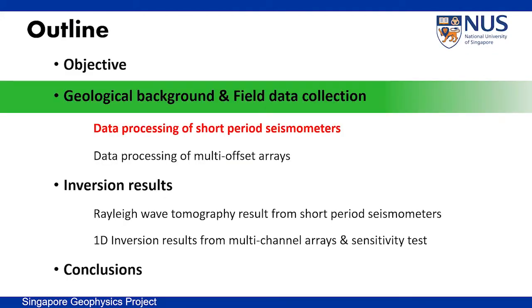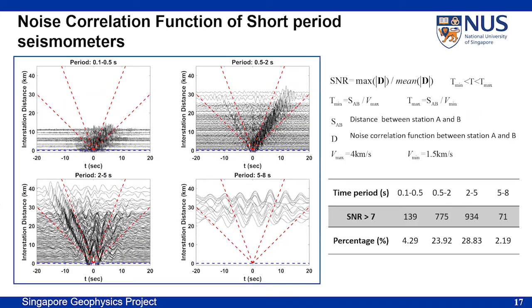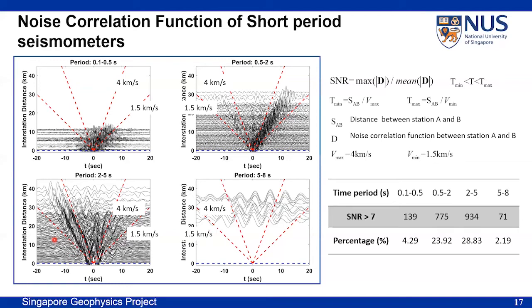For the short-period seismometer records, we cross-correlate all receiver signals with each other, finally getting a total of 3,240 station pairs. We define signal-to-noise ratio as the ratio between the maximum amplitude and the average amplitude for each noise correlation function. We plot all cross-correlation functions with a signal-to-noise ratio higher than 20, re-arranged by inter-station distance. The noise correlation functions in the period between 0.5 to 2 seconds and 2 to 5 seconds show a clear Rayleigh wave packet traveling at velocities between 0.5 and 4 km/s. The energy in the band of 0.5 to 5 seconds has the strongest signal-to-noise ratio, providing lower frequency and deeper structure information.